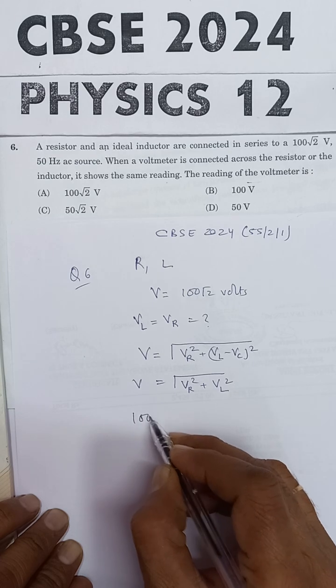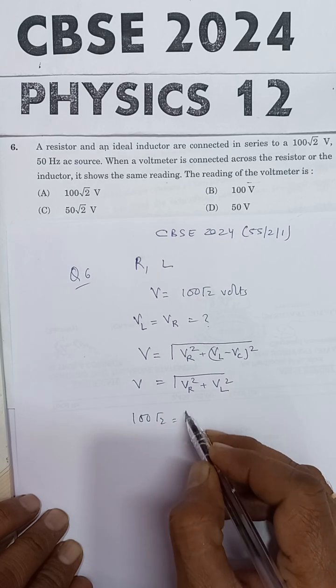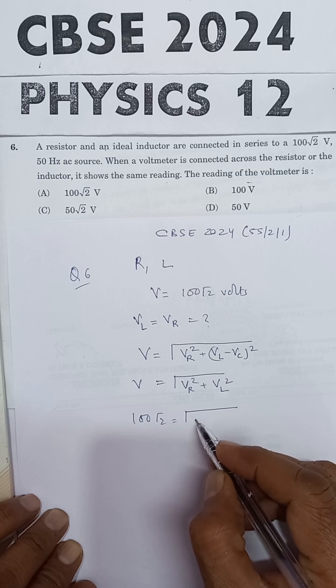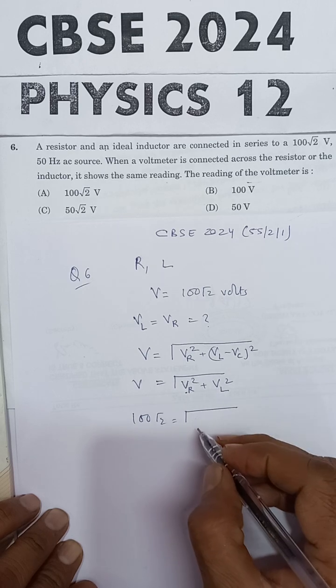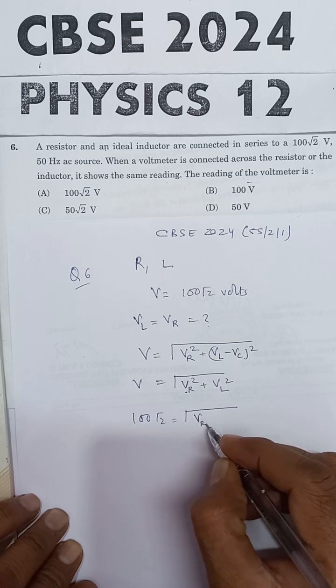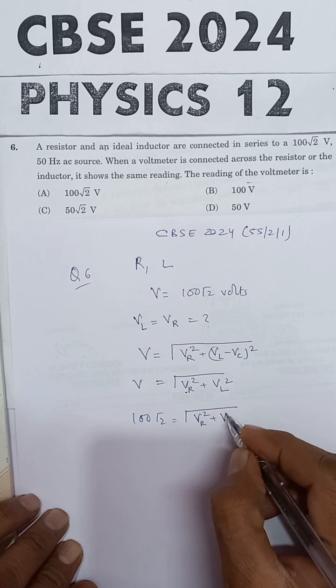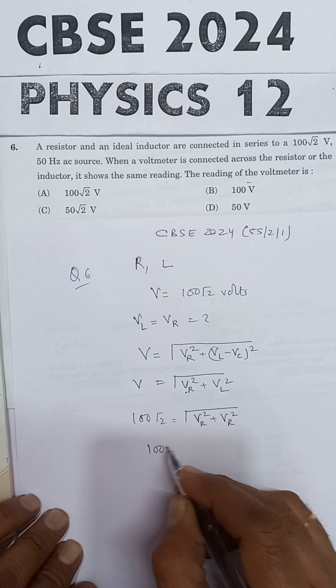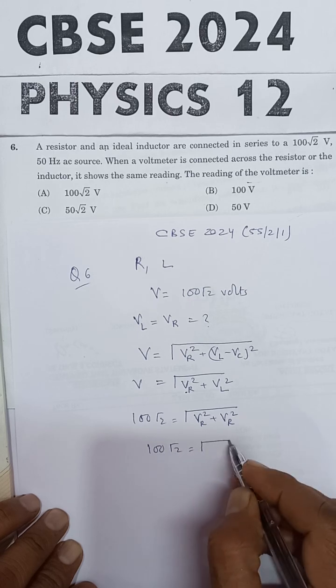The applied potential difference 100 root 2 equals under root of VR square. Since VL square and VR square are the same, we can write VR square plus VR square. So 100 root 2 equals under root of 2 VR square.